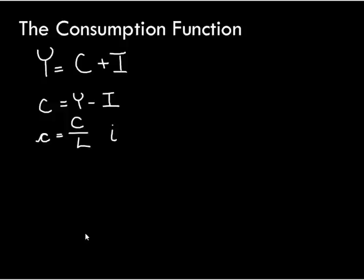Little i is really bad notation — it looks like nominal interest rates. But for chapters 7 and 8, we're going to adopt the same notation that's in the book, primarily because I can't think of a better one. So little i is investment over L, the per worker investment. If I divide the national income accounting identity through by L, I can rewrite it using little c and little i.